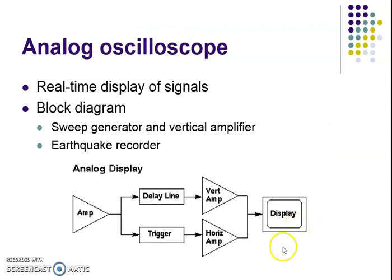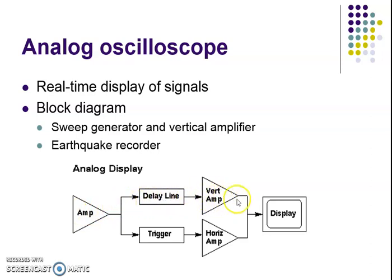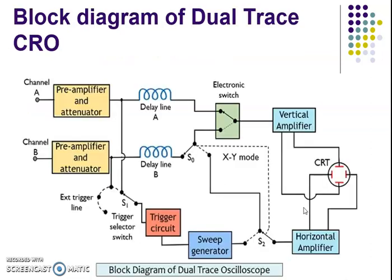This is the simplified block diagram of the analog dual trace CRO. The main blocks include a preamplifier and attenuator, a delay line, a trigger circuit, and a horizontal amplifier. The delay line and vertical amplifier form the vertical section, while the trigger circuit and horizontal amplifier form the horizontal section, which then feeds the display.